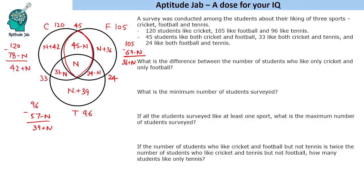The first question asks: what is the difference between the number of students who like only cricket and only football? Only cricket is n plus 42 and only football is n plus 36, so the difference is 6 — no matter what the value of n is.